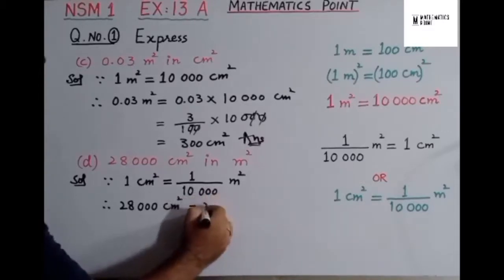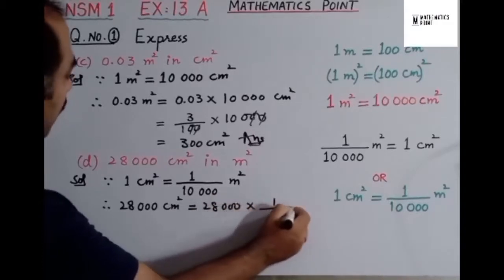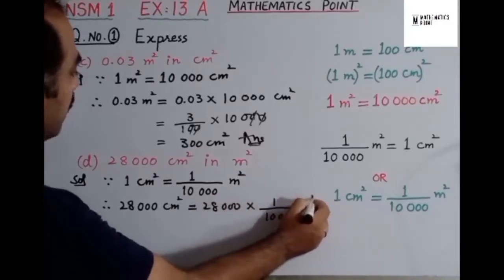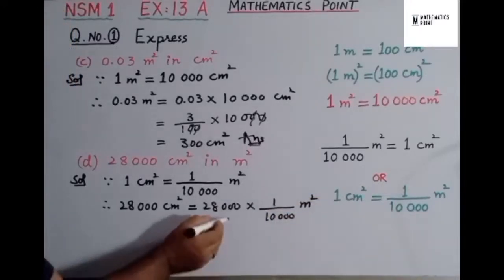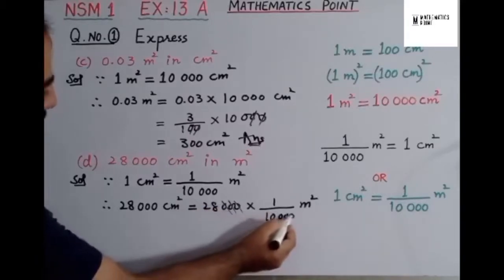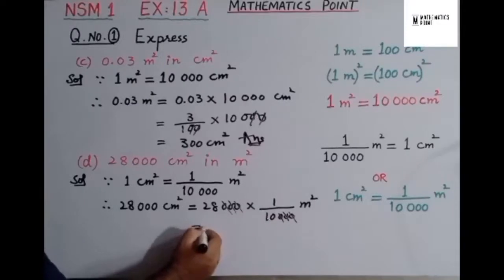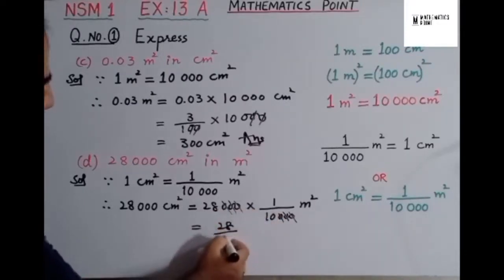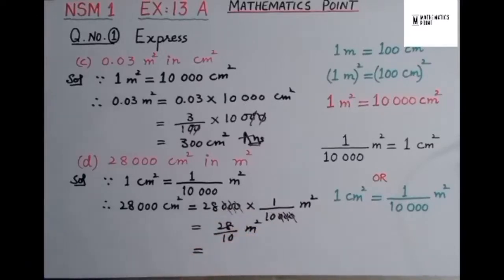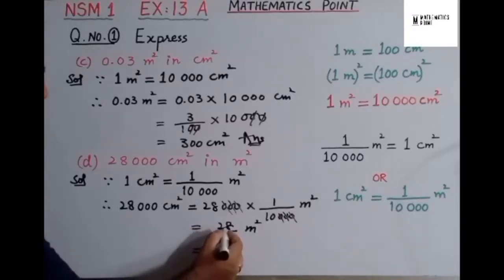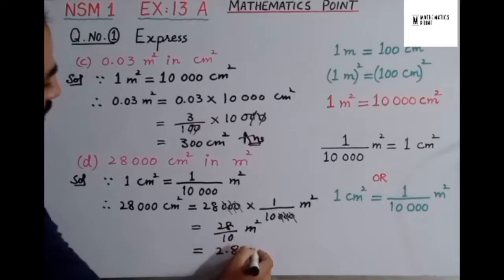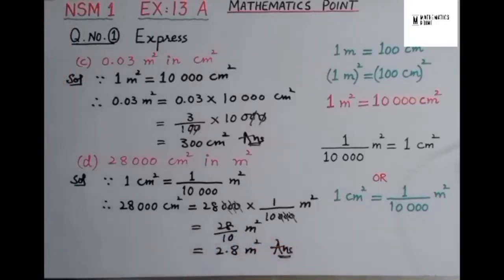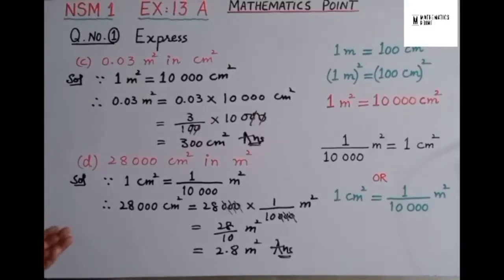We write 28,000 multiplied by 1 over 10,000. Cancelling three zeros from 28,000 with three zeros from 10,000, we get 28 over 10 meter square. Dividing 28 by 10, we place the decimal point between 2 and 8, giving us 2.8 meter square. I hope you have easily understood this question. If you have any query, write in the comment box. Take care — Allah Hafiz.